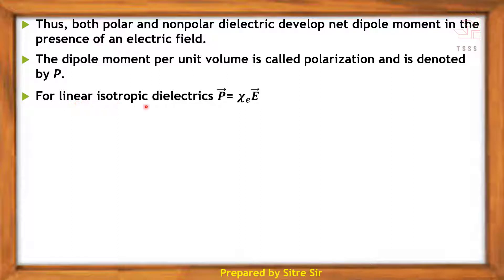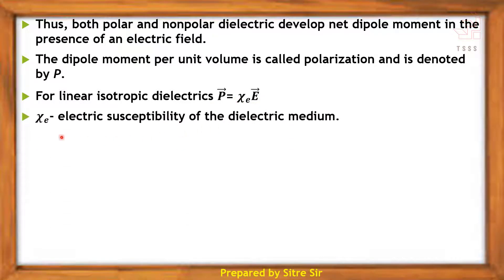For linear isotropic dielectrics, the polarization P equals χE times E, where χE is the electric susceptibility of the dielectric medium. For vacuum, χE is equal to zero.